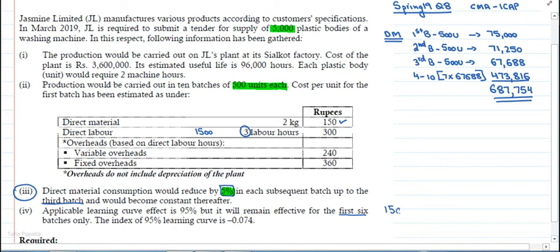a equals 1500 because that's the time for the first batch, into x (number of batches) power b (negative 0.074). This gives the average time for 6 batches. To get total time for 6 batches, multiply by 6. Let's see what this equals. The total time for 6 batches is 7,882 hours.